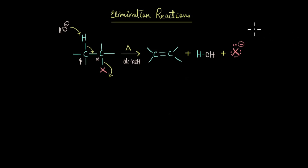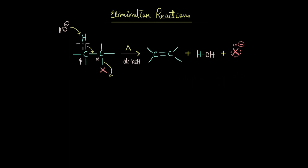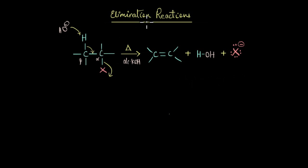Let's look at another important type of reaction that haloalkanes undergo, which is the elimination reaction. In order to undergo elimination reactions, our haloalkanes must have a beta hydrogen — that is, a hydrogen atom attached to the beta carbon. The alpha carbon is the carbon to which the halogen is directly attached, and the carbon adjacent to the alpha carbon is the beta carbon. Only when our haloalkanes have a beta hydrogen can they undergo an elimination reaction.